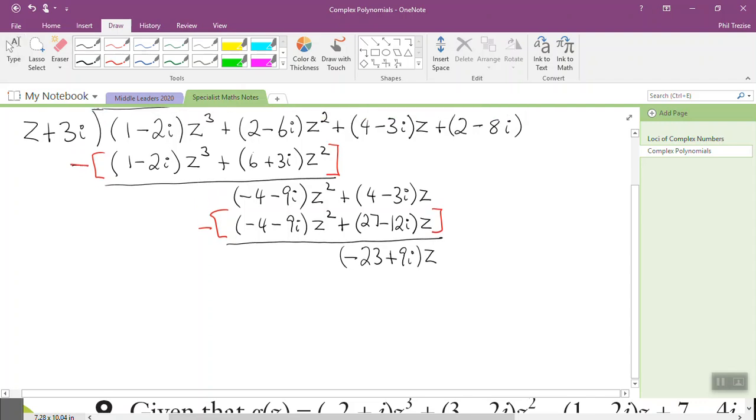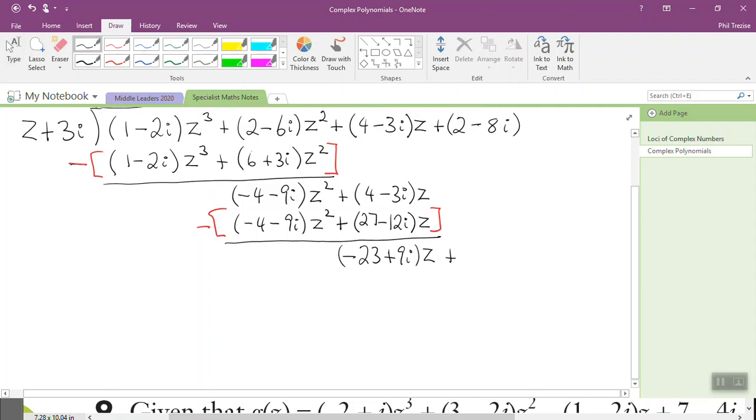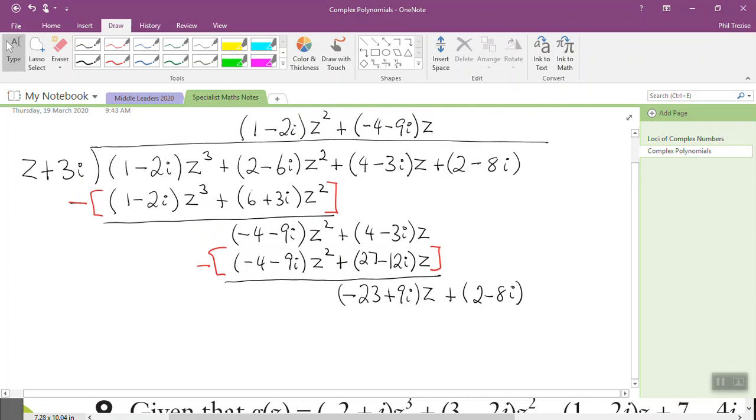Bring down the next, that's the last term. Bring down, we have here, 2 take 8i. Now we divide the largest term here, is a number times z, divided by z, that leaves me with the number negative 23 plus 9i, multiply through.